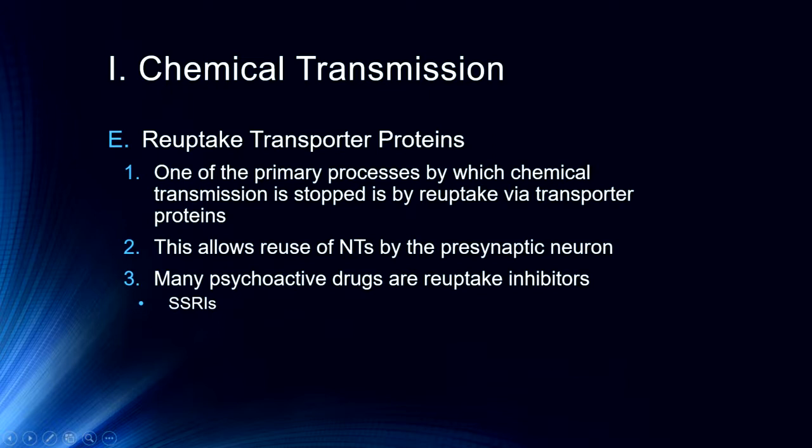More familiar to many are selective serotonin reuptake inhibitors, or SSRIs — antidepressant drugs like Prozac, Zoloft, etc. These drugs block the reuptake transporter protein selectively, blocking only certain reuptake proteins rather than all serotonin reuptake. We also talk about norepinephrine reuptake inhibitors, or NRIs, and oftentimes antidepressant drugs include both an SSRI and an NRI component.